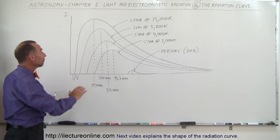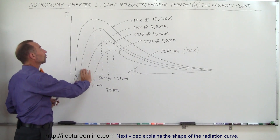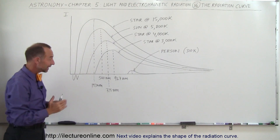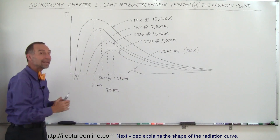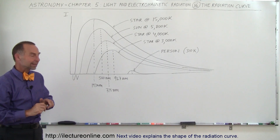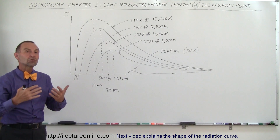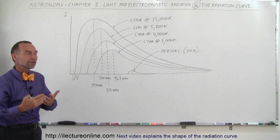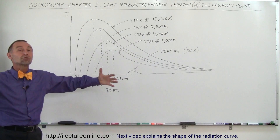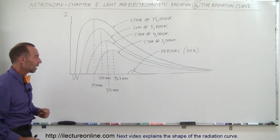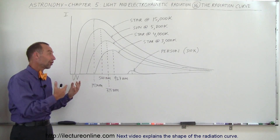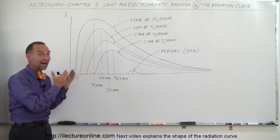So the vast majority of the radiation coming from that star at 15,000 Kelvin is UV radiation. Very hot stars like that have a very strong radiation curve in the UV, meaning they blast lots of UV into their surroundings.